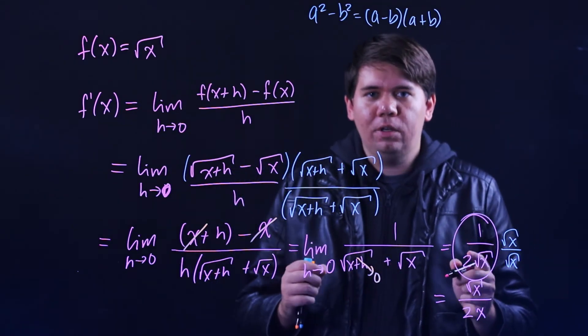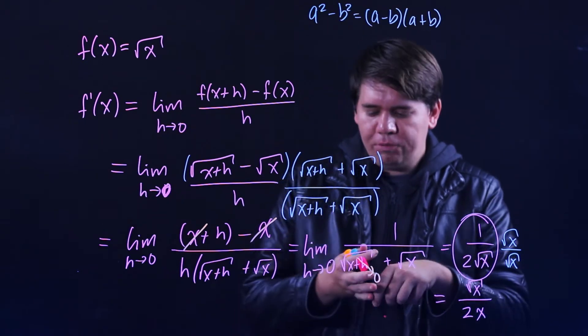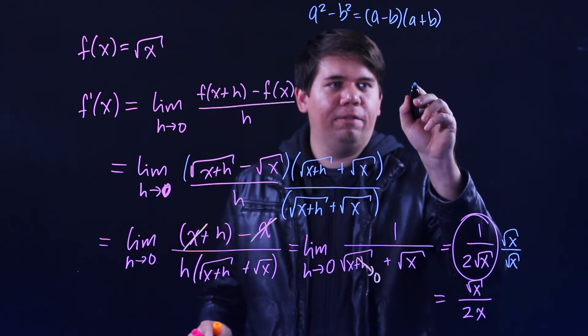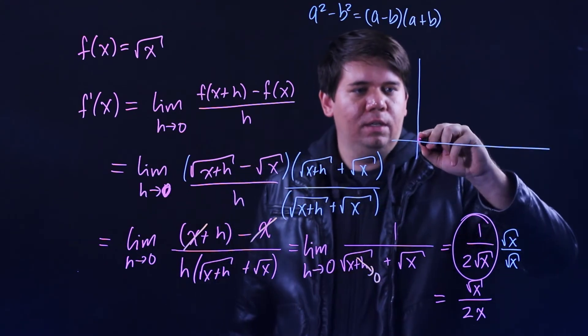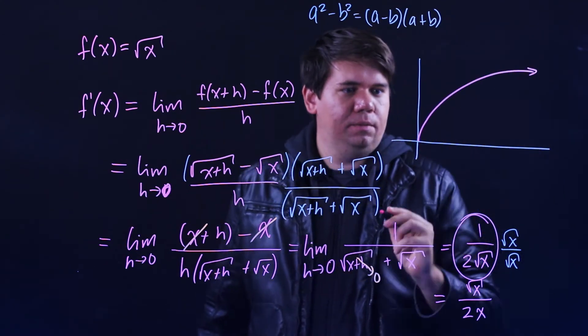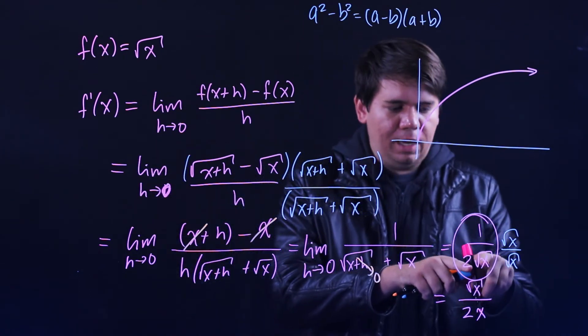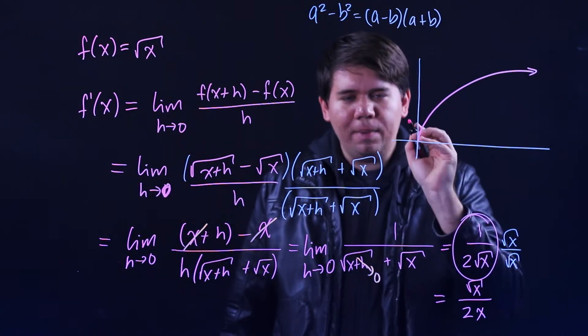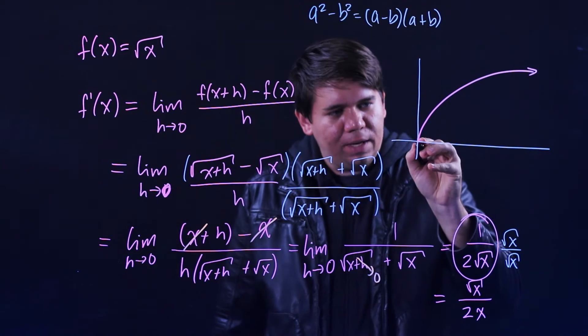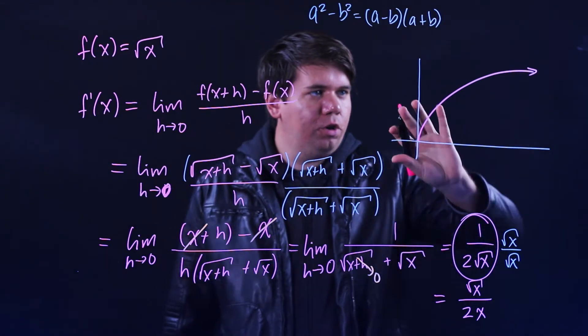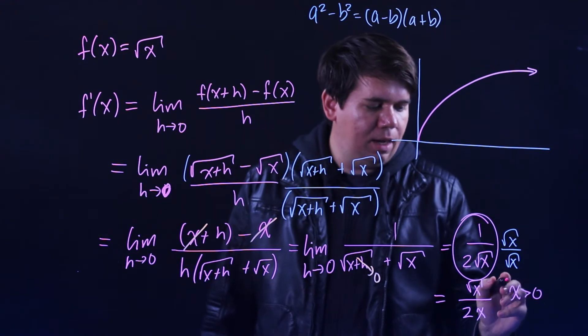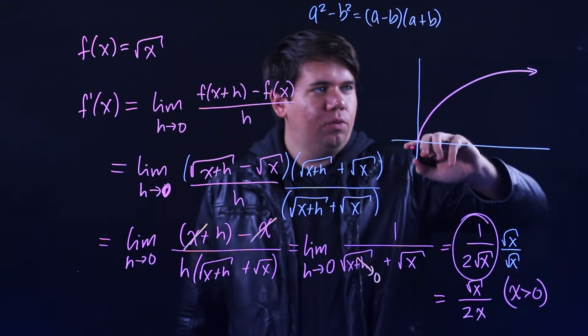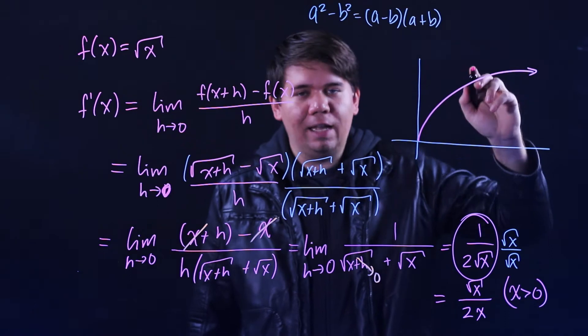What is this telling you graphically? If we sketch a graph of the square root of x, notice this is not defined when x equals 0, it's only defined on one side. We're only going to be looking at this for positive values of x, the only place where this function makes sense to look at its tangent lines.